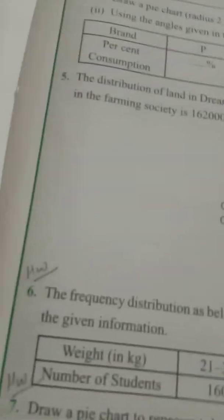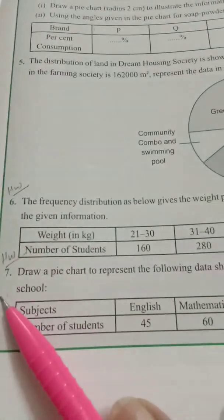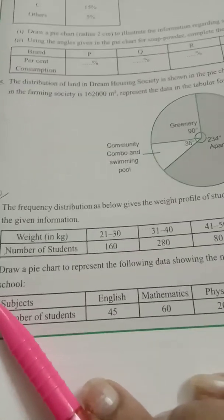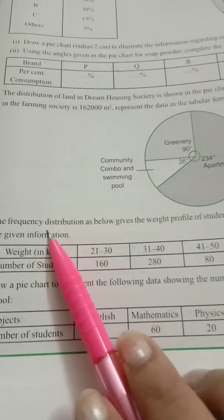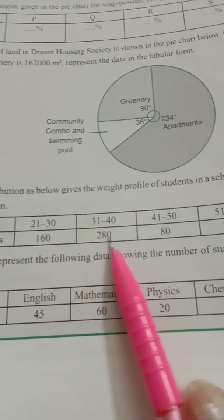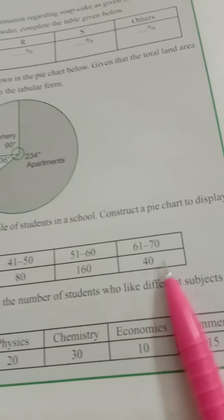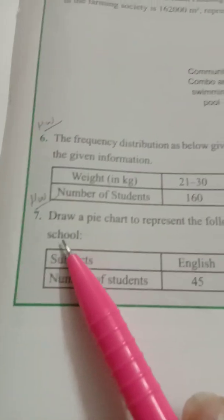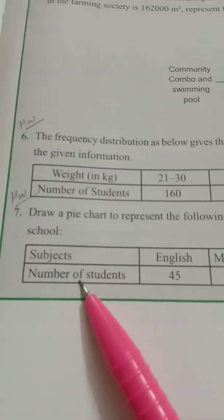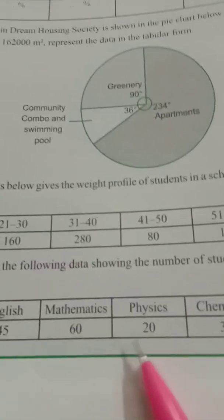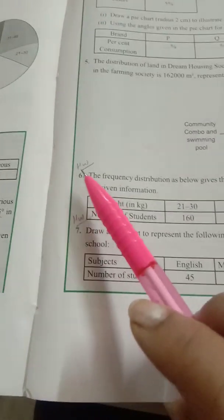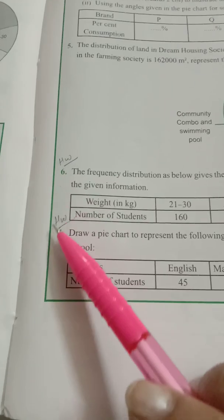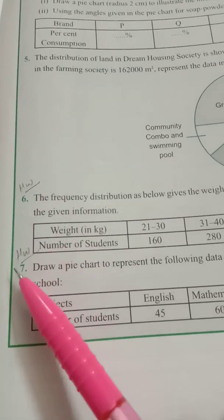Now children, question number six as well as seven, these two questions will be your homework. You have to do the questions yourself. In question six you have to construct a pie graph. Same ways: number of children given, make it into degrees, convert into degrees. For the second question, again you have to draw the pie graph. It's number of students, change it into degrees. Please do question number six and seven as homework. We finish the chapter here.